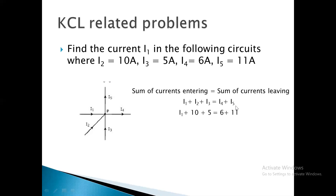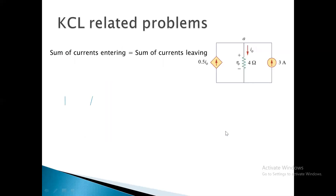Substituting the known values: I2 and I3 are 10 and 5, so their sum is 15. I4 and I5 values give 17 and 2, summing to a total on the right-hand side. Solving the equation gives us the value of I1.